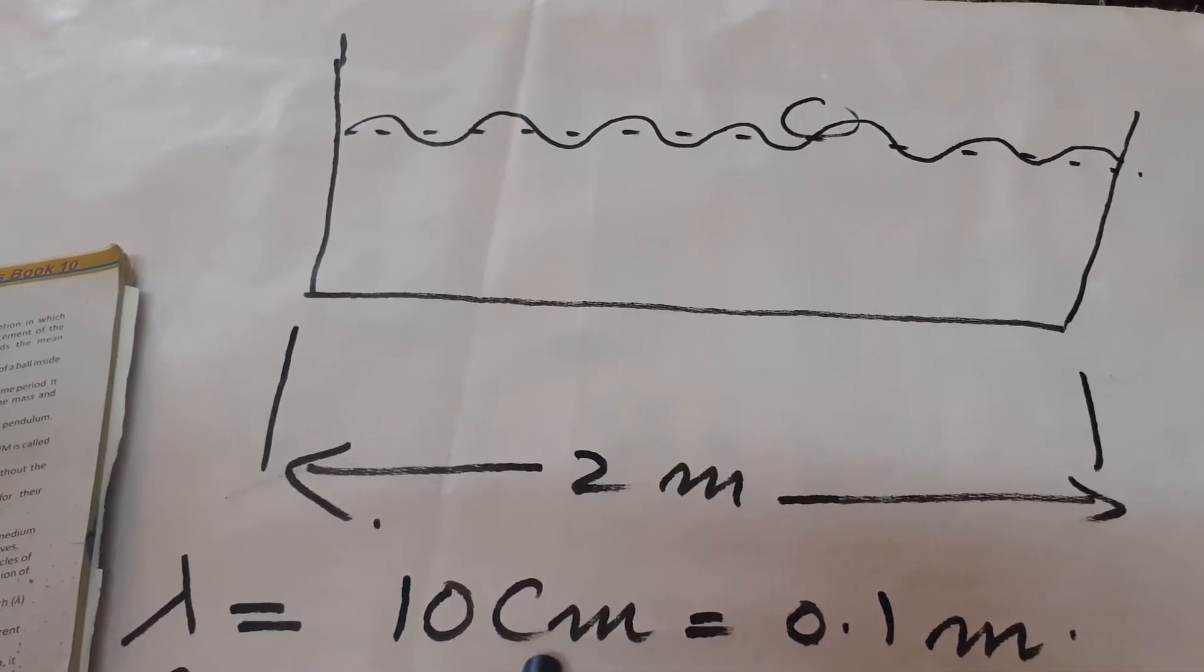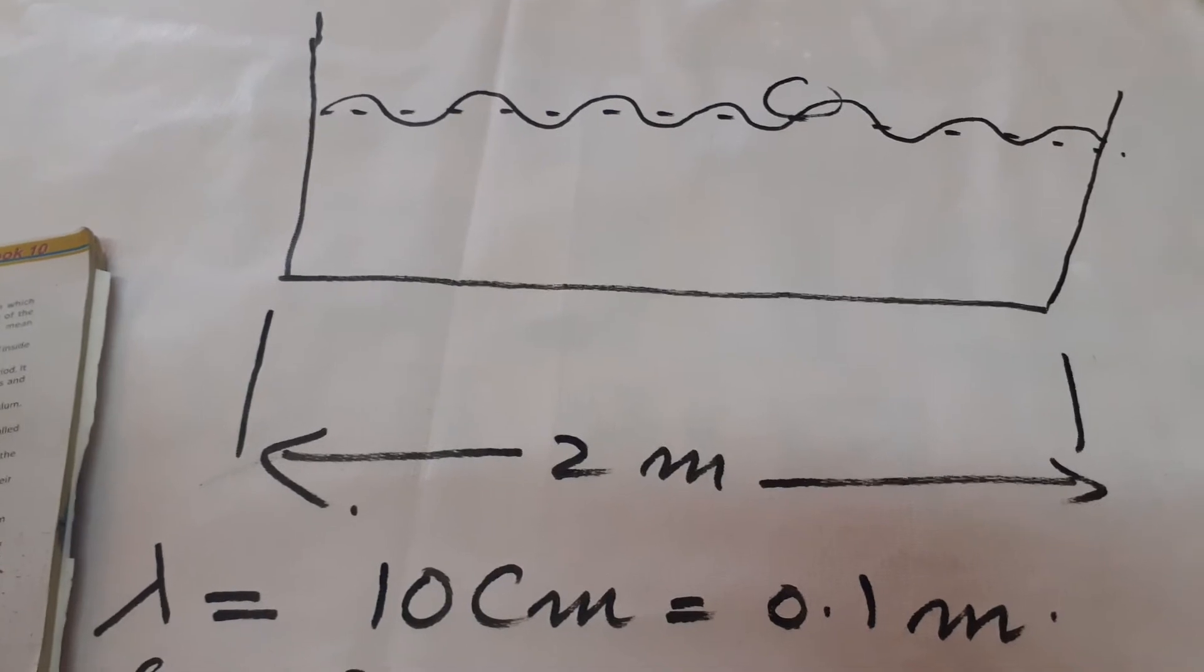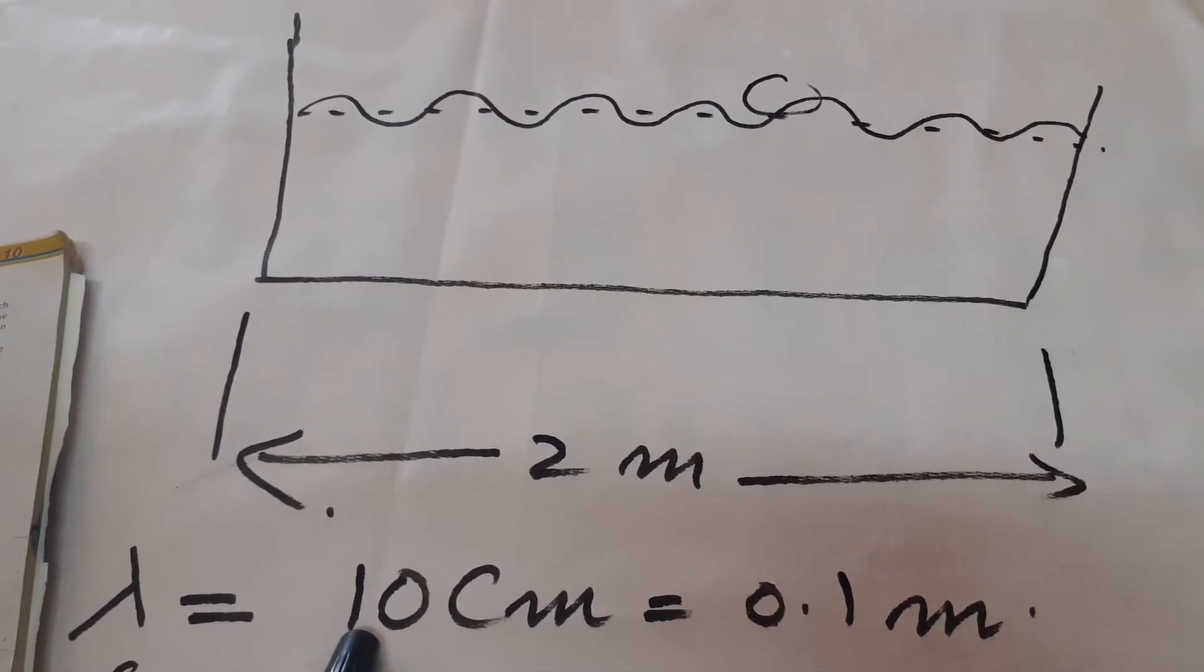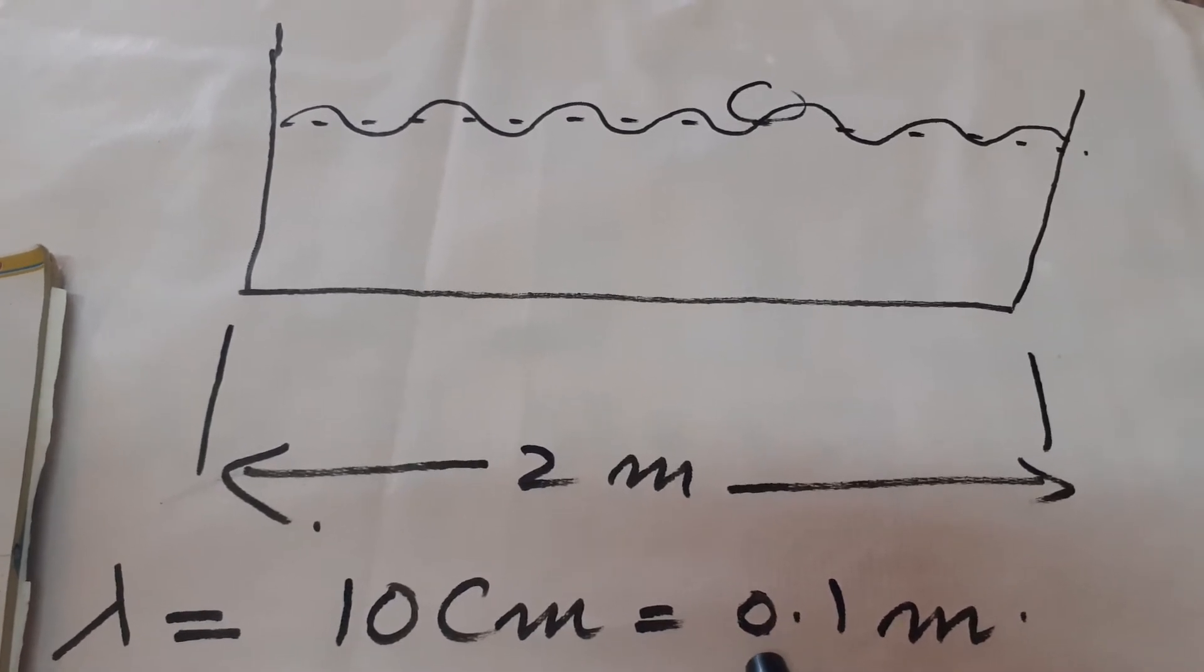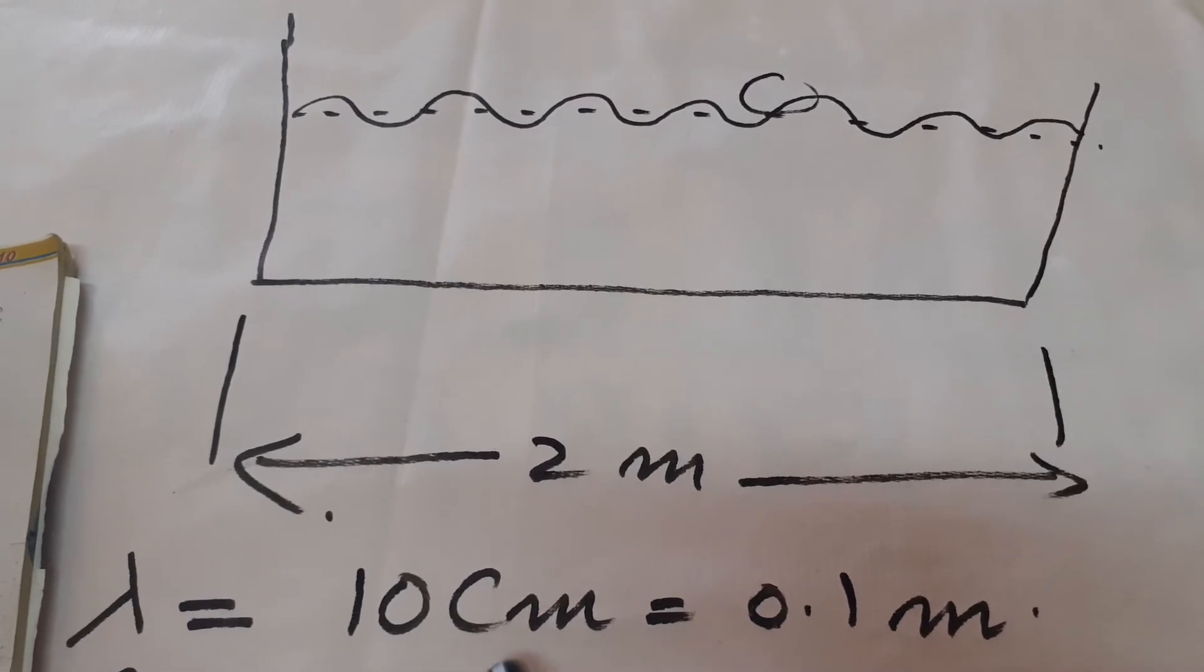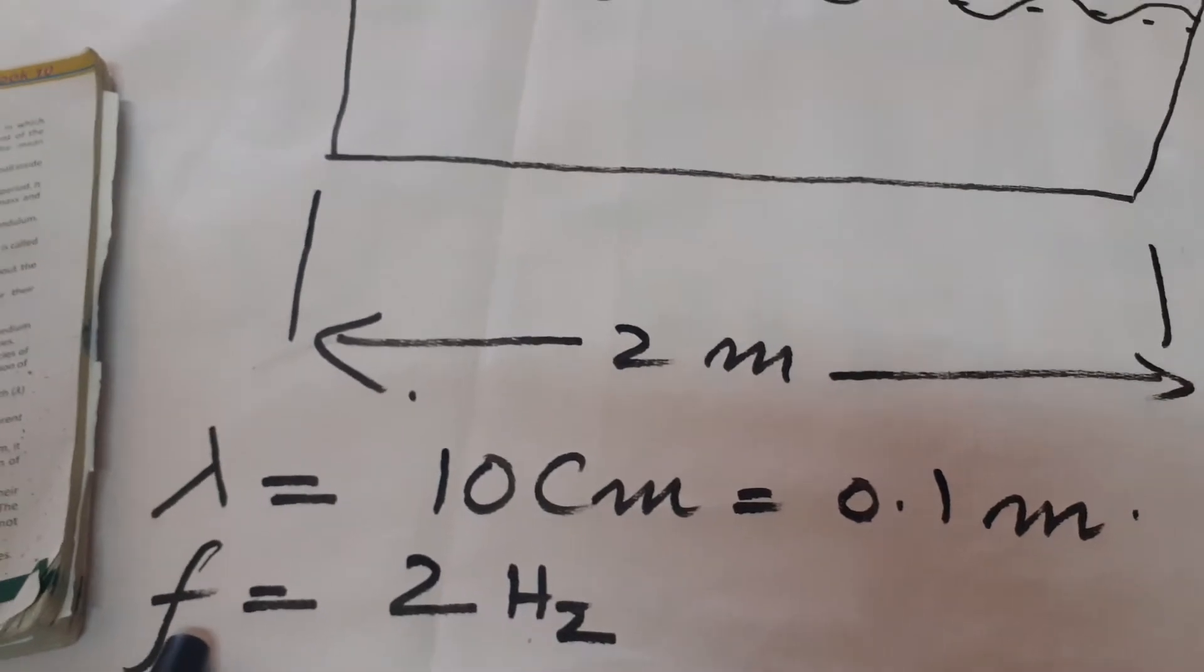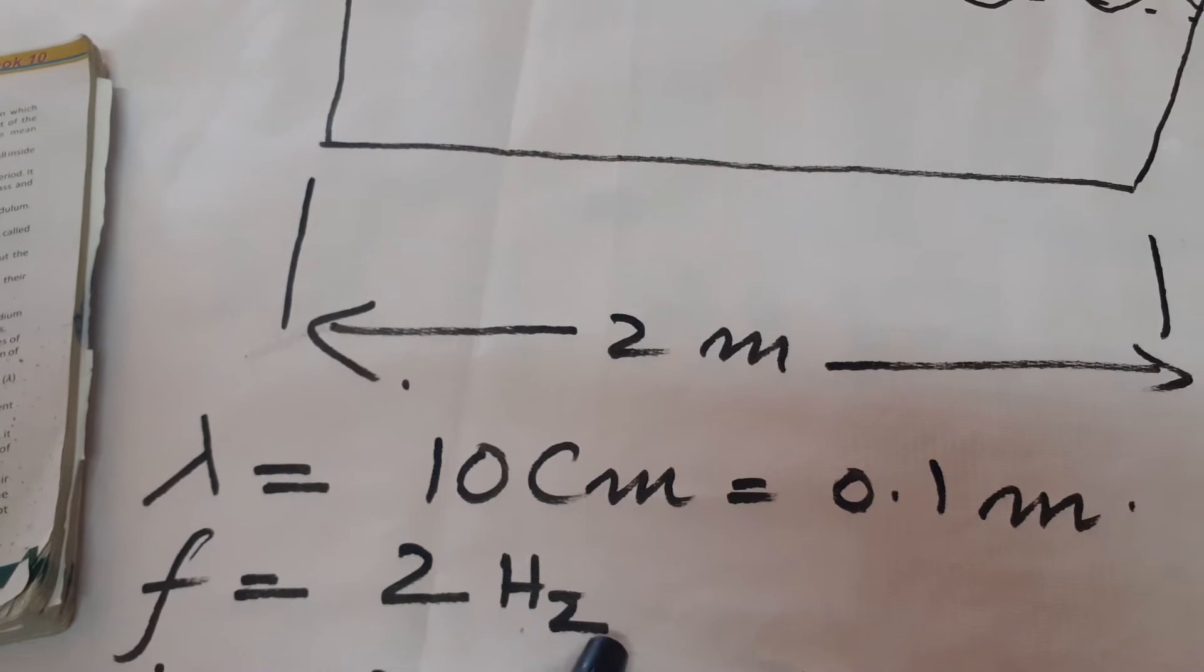We divide it by 100 to change it into meters, the SI unit of length. When we divide by 100, we get 0.1 meter. He used the stopwatch to measure the frequency, and the frequency is equal to 2 hertz.